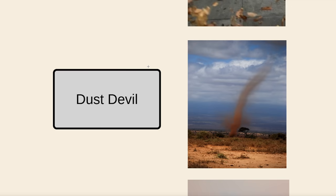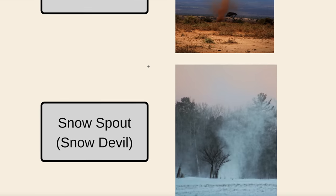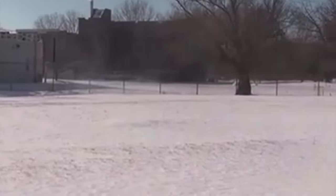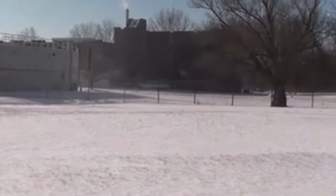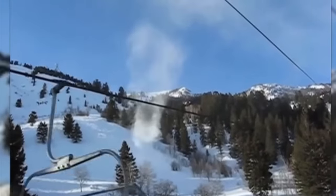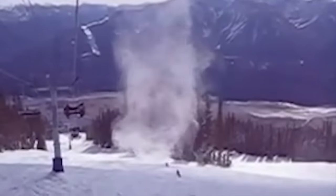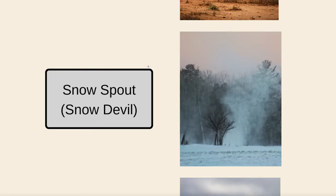A similar vortex to the dust devil is the snow devil, also known as a snow spout or snow tornado. Snow devils are way more rare but do occasionally happen under similar circumstances. Obviously snow melts when it heats up, so it really takes a perfect mix of conditions for these to occur — but they definitely look sweet.